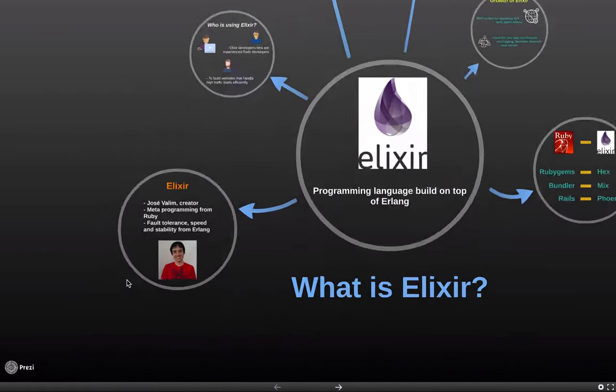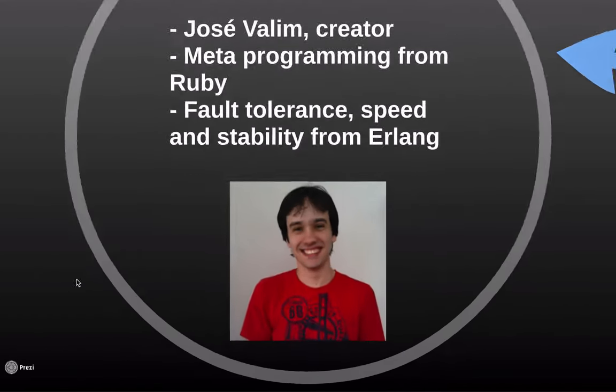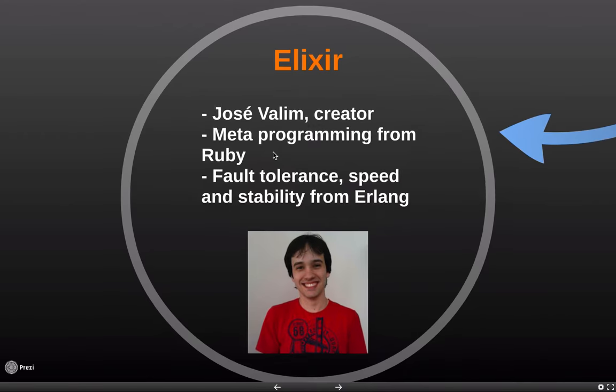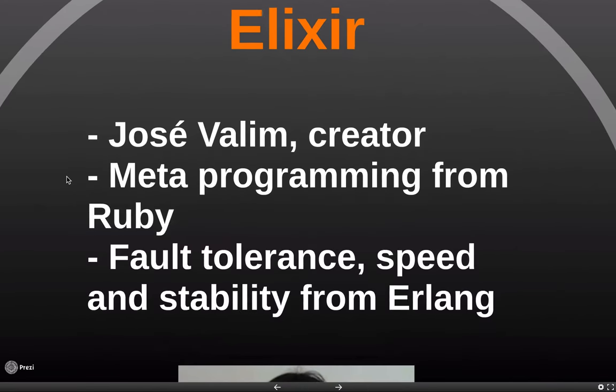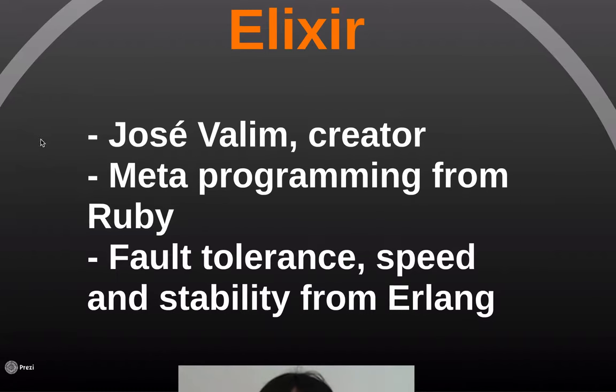Jose Valim, the creator of the Elixir programming language, was a core contributor to the Rails open source project, and he wanted some of the elegant and convenient features of Ruby in a language with the fault tolerance, speed, and stability of Erlang systems.